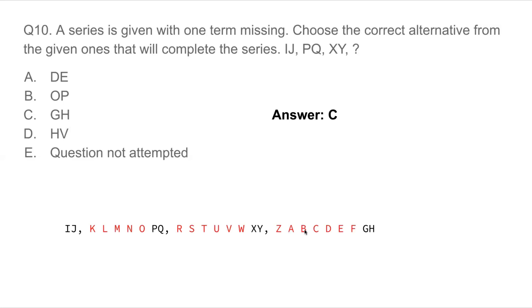Continuing the series: A, B — then C, D, E, F — that's 6 letters. Then the next would be 7. So the missing term follows this pattern, giving a gap of 7 letters.